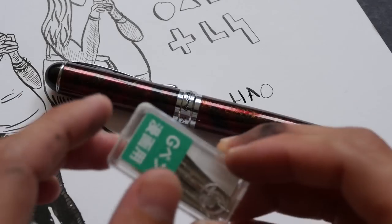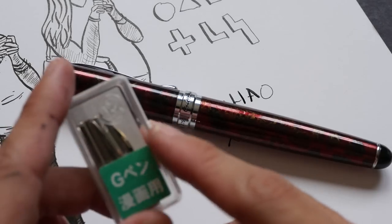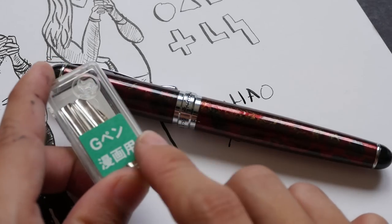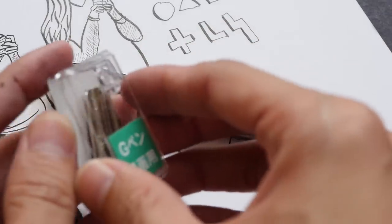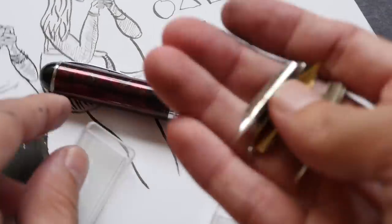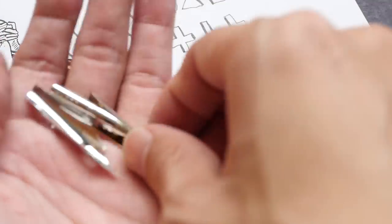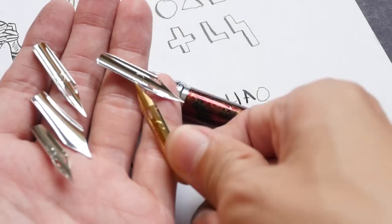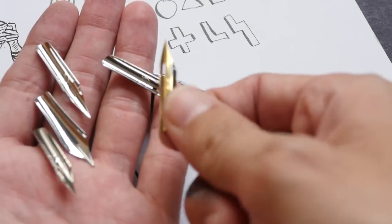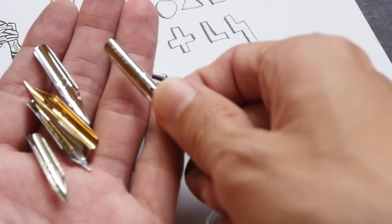The other thing you need of course is your zebra g-nibs. You can get this in a set of 10. For the chrome version it's just under $10. They also have the titanium plated version which is yellow in color. So this is the chrome version.